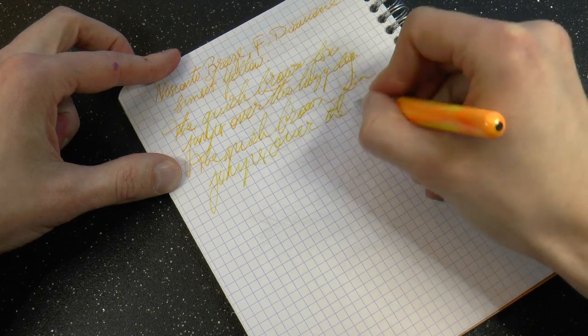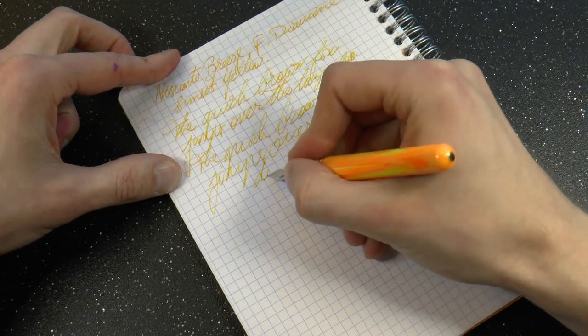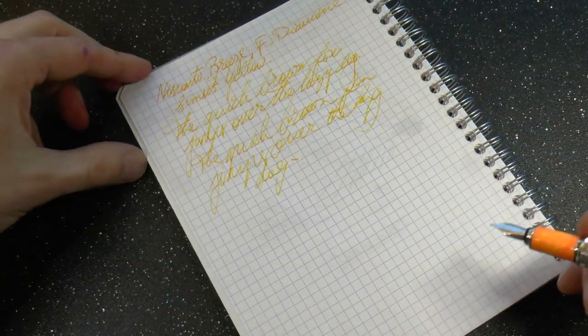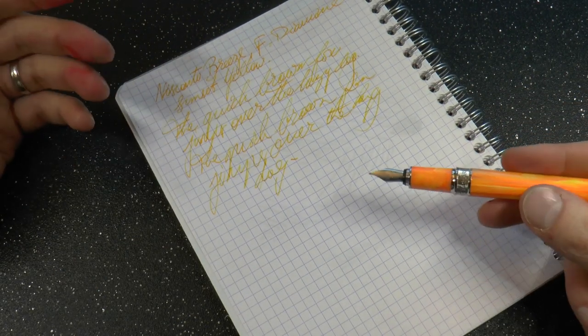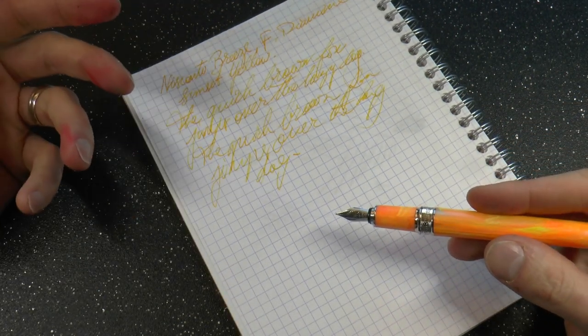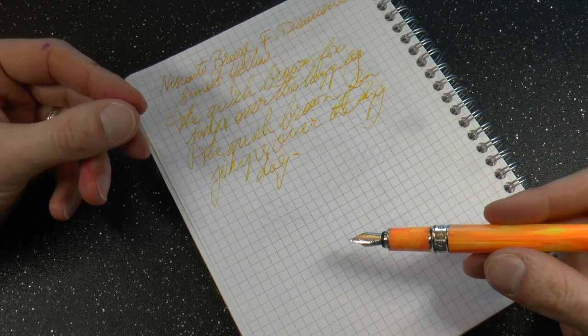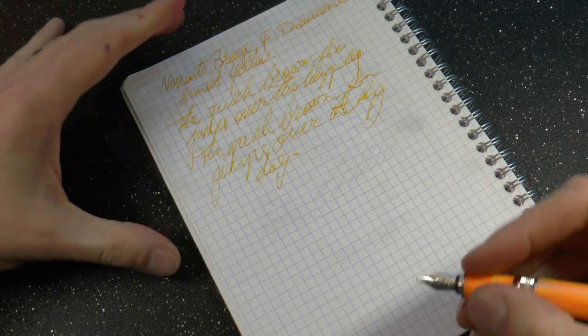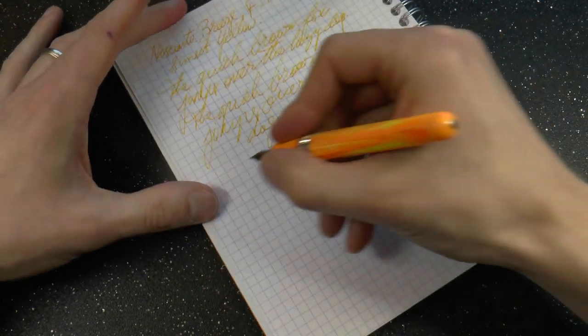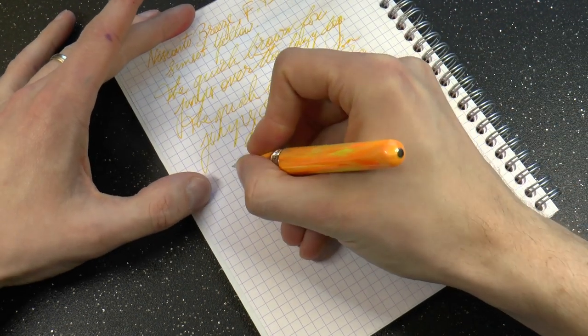But that to me is not the biggest issue. There are other companies that have nibs that occasionally are a little broader than you would expect, or a little wider than you would expect, a little finer than you would expect. My biggest issue is the feedback, because I do actually find this unpleasant. This is a scratchy nib. So I'm not super impressed by this.